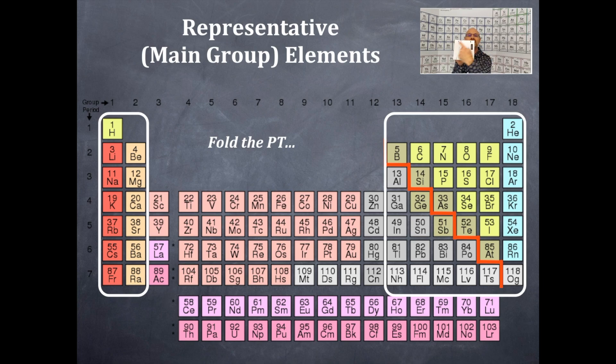These S and P type orbitals are the main group or representative elements. You can see them highlighted in the white section on your periodic table in my lecture right here.